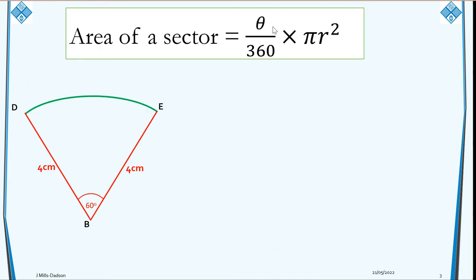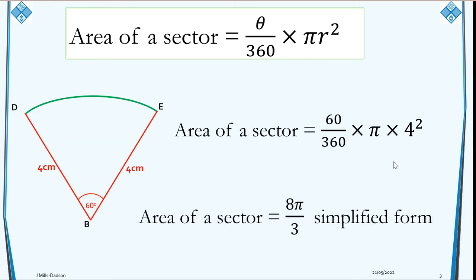Area of a sector is given by θ/360 times πr². Our radius is 4, our θ is 60 degrees. So we work this out: 60/360 is 1/6, and 1/6 of 16 is 8/3. So this simplifies as 8π/3.